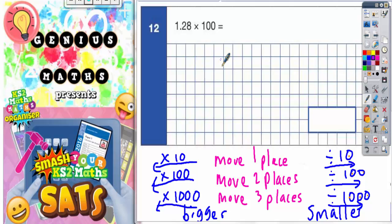So we've got 1.28, let's put it in there. If we imagine each square is a column or a place value, we've got units, tenths, hundredths. In front of units would become tens, units, tens, hundreds, thousands like that.